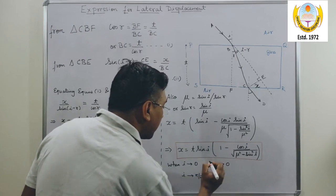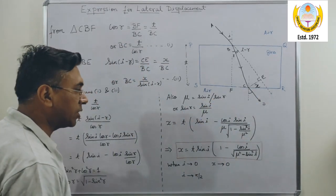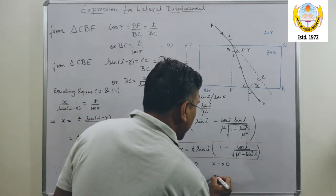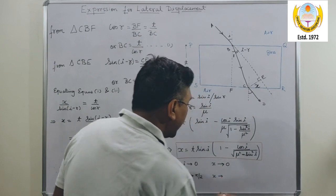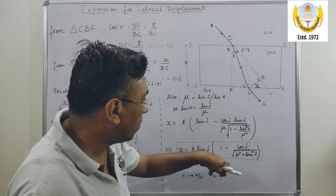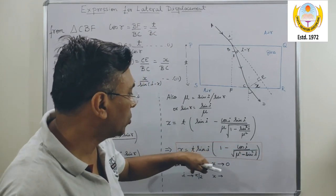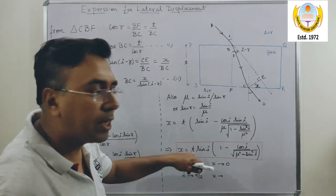Similarly, if I tend I towards 90 degrees, that is towards pi by 2, then what will happen to X? The X will move towards T.